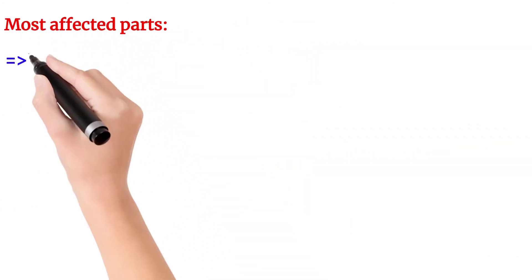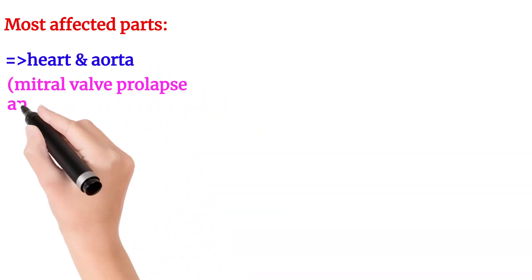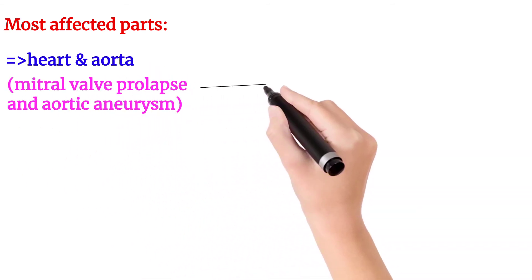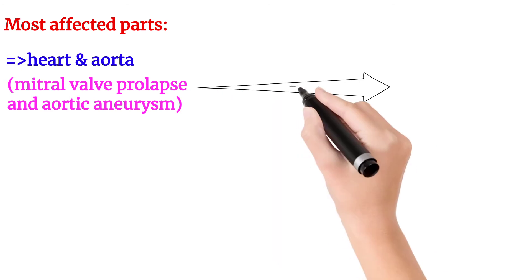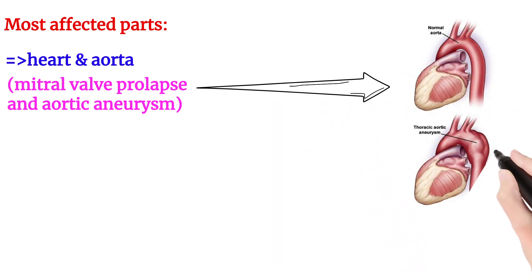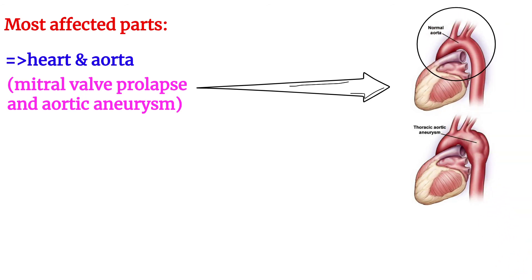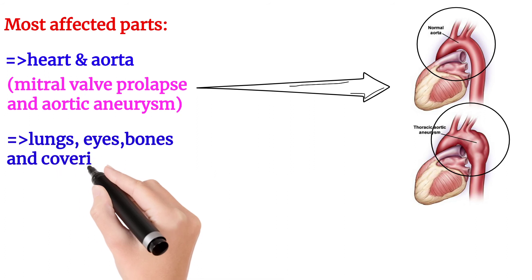The most significant effects of Marfan syndrome are on the heart and the aorta. In the heart, the mitral valve is dislocated from its normal position, which is called mitral valve prolapse. The aorta becomes dilated, which is called an aortic aneurysm. This is the normal feature of the aorta, and this shows the dilated aorta — the aortic aneurysm.